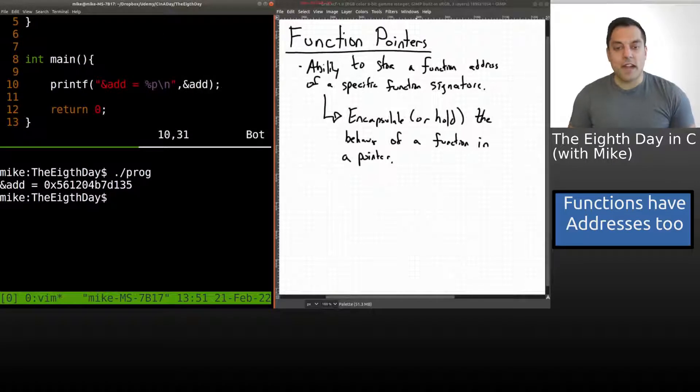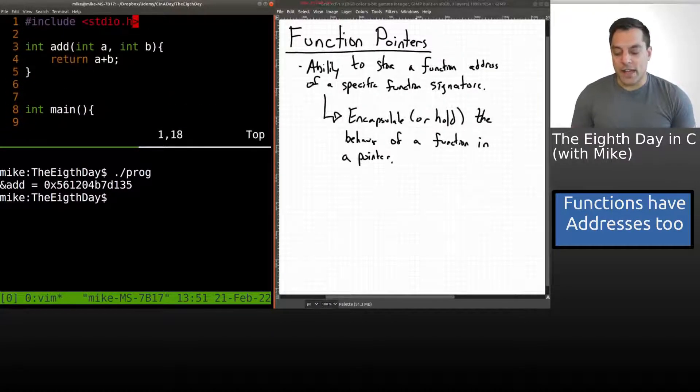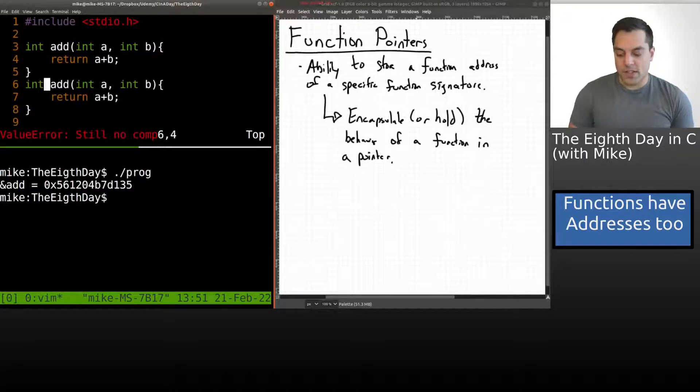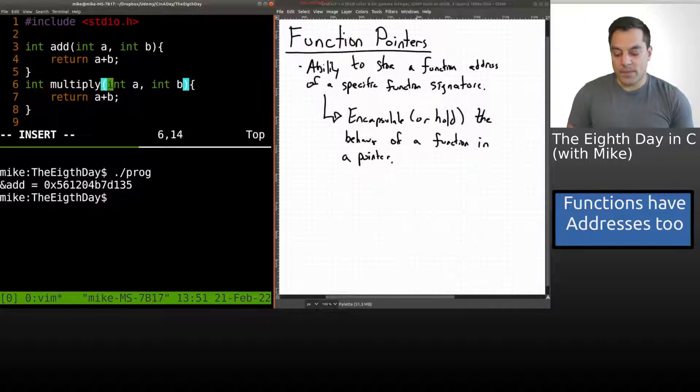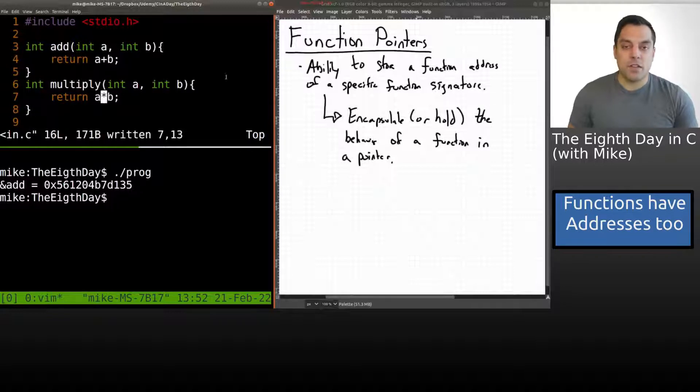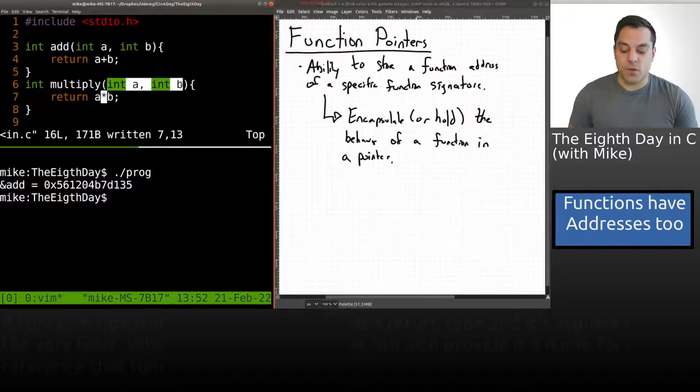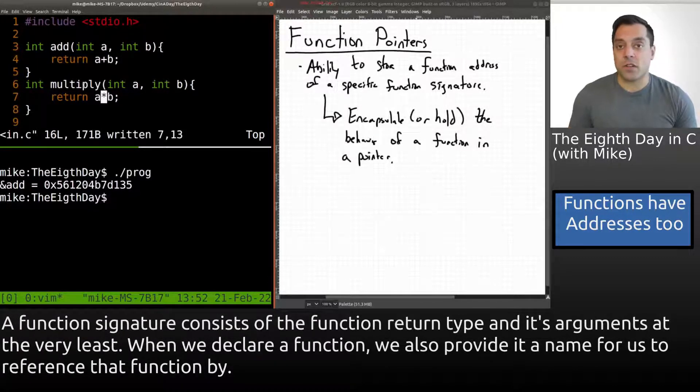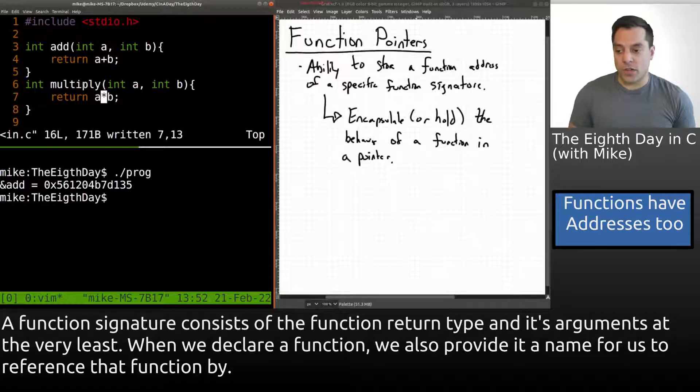Let me make this program more interesting by giving us another function here, I'm going to call it multiply. Instead of adding the two numbers, we'll multiply the two numbers. So two different functions. But notice that the signatures of each of these functions match here, where they're each taking in two integers and returning an integer. That's going to be important for our function pointer.